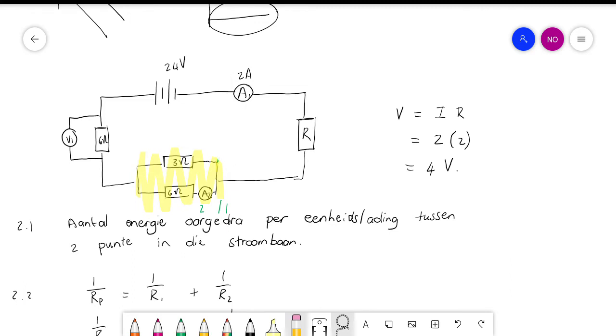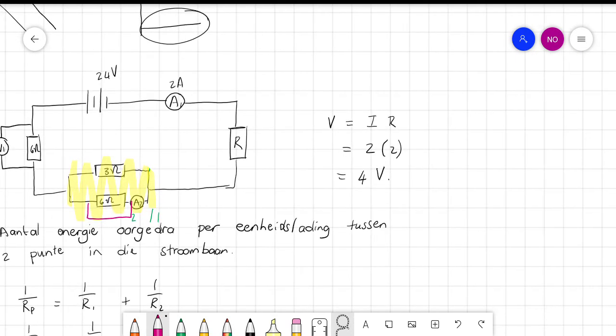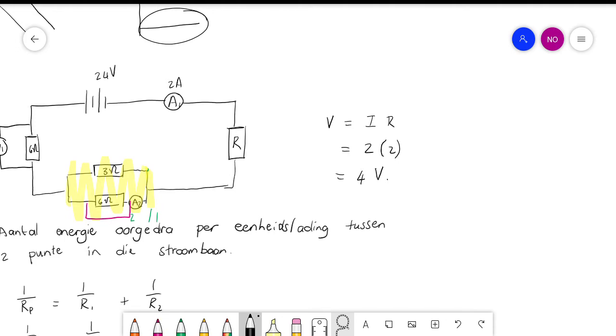This one, because this whole thing has a potential difference of 4 volts, I can say 4 volts will flow through that one as well. So now for the bottom branch, to work out the current, I'm going to say, E is equal to I times R. Same answer.